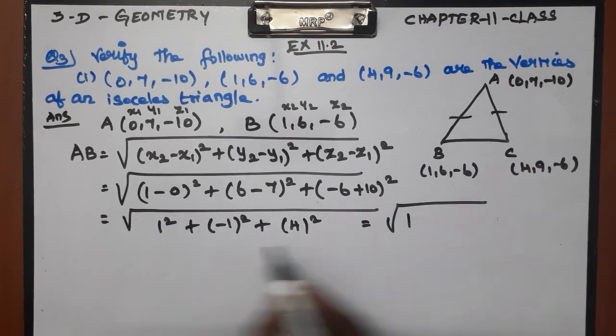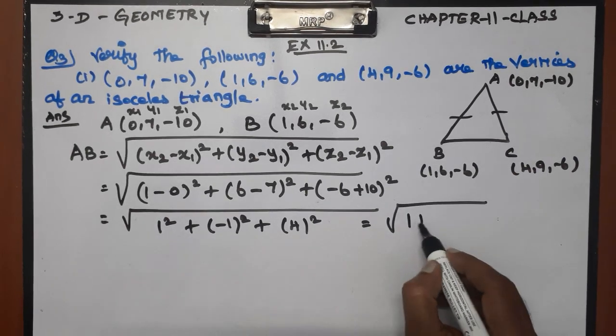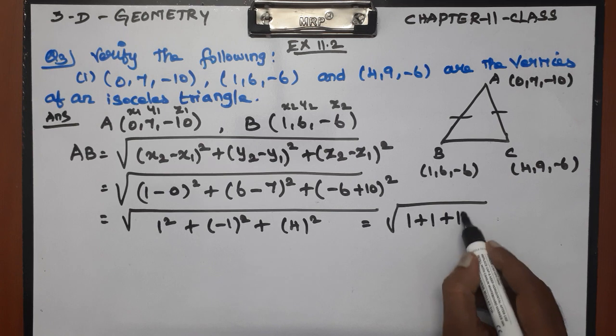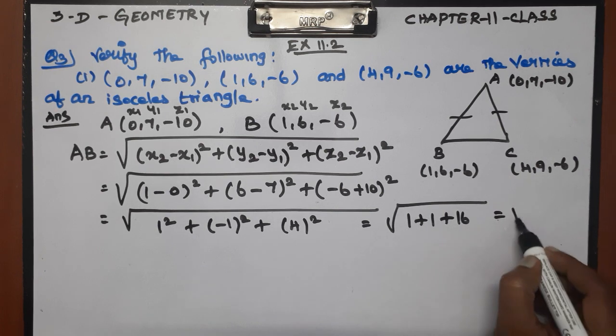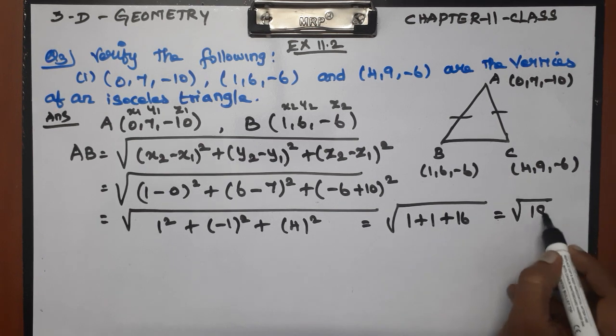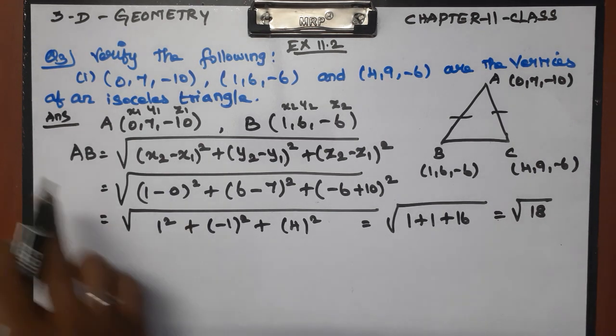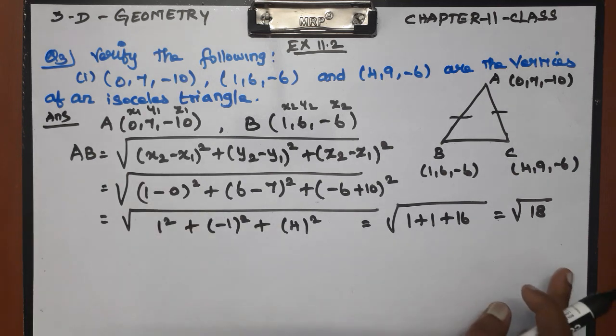Computing AB: 1² = 1, (−1)² = 1, 4² = 16 — wait, simplifying: the result is equal to √18. So AB = √18.